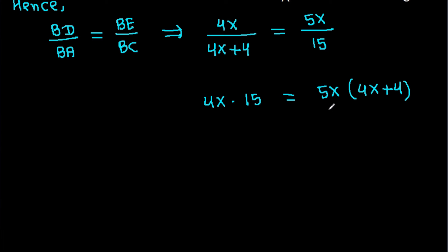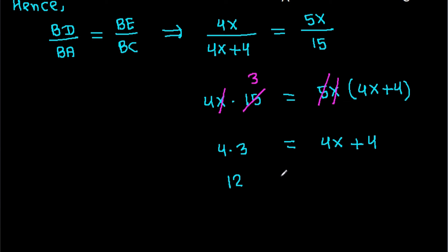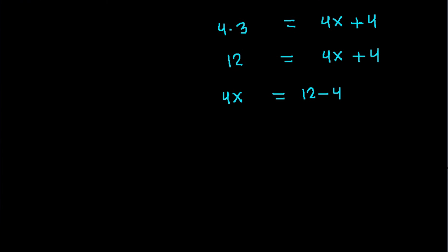And x will get cancelled, and 5 times 3 is 15. So 4 times 3 equals 4x plus 4, giving 12 equals 4x plus 4, so 4x equals 8. Therefore x equals 8 over 4, so we get x is 2.